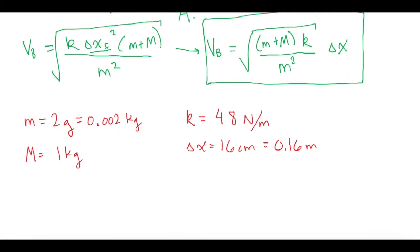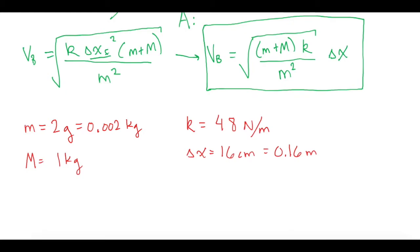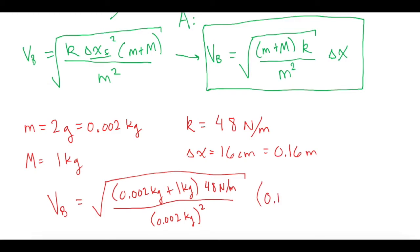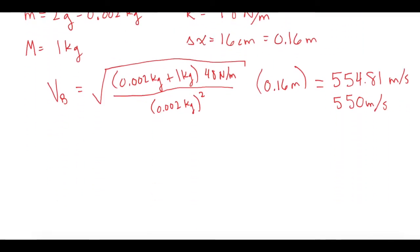Plugging everything into our equation: v_b equals the square root of (0.002 kg + 1 kg) times 48 N/m, all over (0.002 kg) squared, times 0.16 meters. When you plug that into your calculator, that gives exactly 554.81 meters per second, which rounds to 550 meters per second. That is part b.